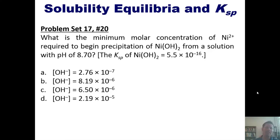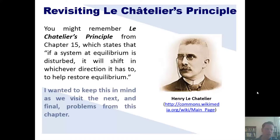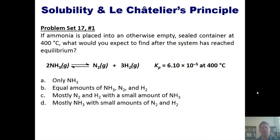You may recall Le Chatelier's Principle from Chapter 15. In a nutshell, if a system at equilibrium is disturbed, it will shift — either right or left — in whichever direction helps restore equilibrium. Keep this in mind for the next problems: if ammonia is placed into an otherwise empty sealed container at 400°C, what would you expect to find after the system reaches equilibrium? Think about it on your own, then click the link for my board explanation.